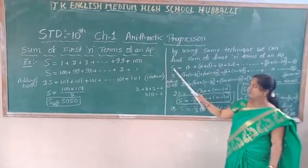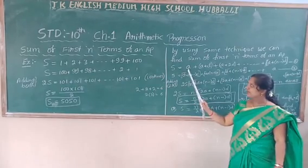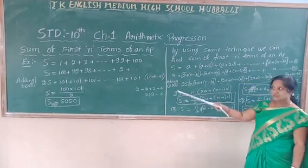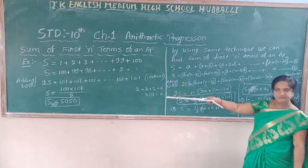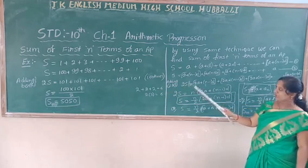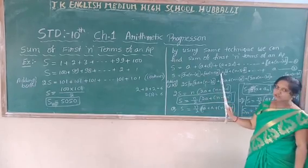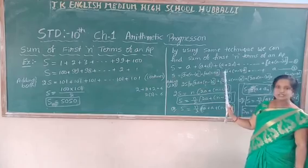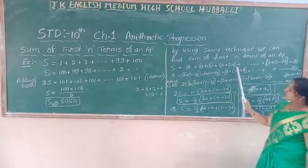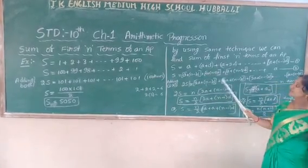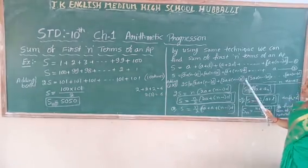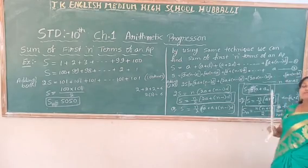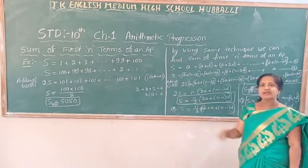If you add S plus S, that is 2S. Adding the two equations: a plus a gives 2a plus n minus 1 into d. By the same example we know all terms are going to come out the same. So if you add also it comes the same — all terms give 2a plus n minus 1 into d. How many times do these terms repeat? Here we have n terms, so they repeat n times.